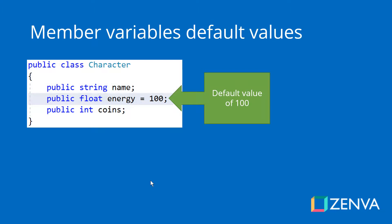We can also have default values for our member variables. If we don't specify the value of energy when we create characters, they will have an energy of 100 by default. If we don't specify a default and don't enter any number, the value will be null.